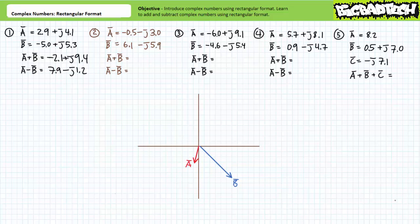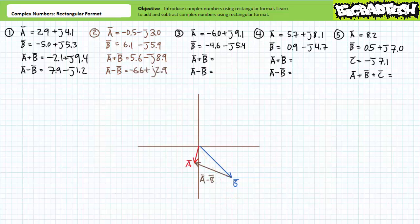For example problem 2, a has a value of negative 0.5 − j3.0, which places us in the third quadrant. B has a value of 6.1 − j5.9, which places us in the fourth quadrant. When we add a and b, we obtain a combined result of 5.6 − j1.9. If we subtract b from a, we obtain a difference of negative 6.6 + j2.9.